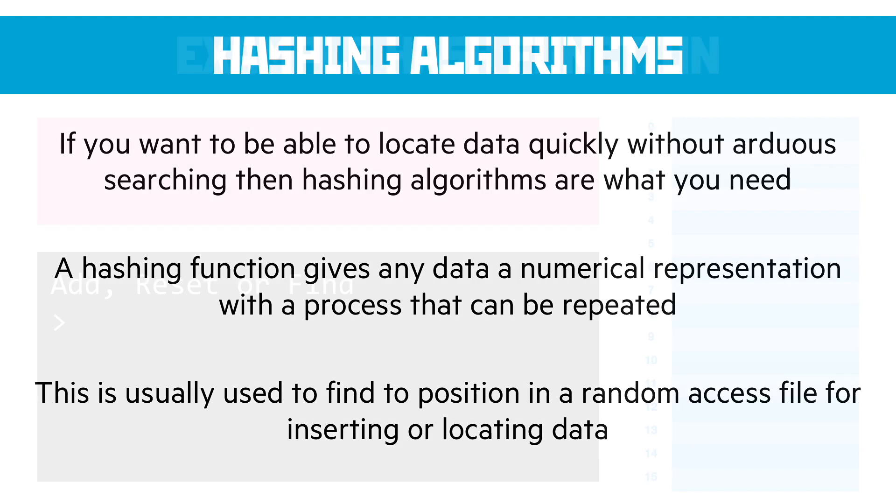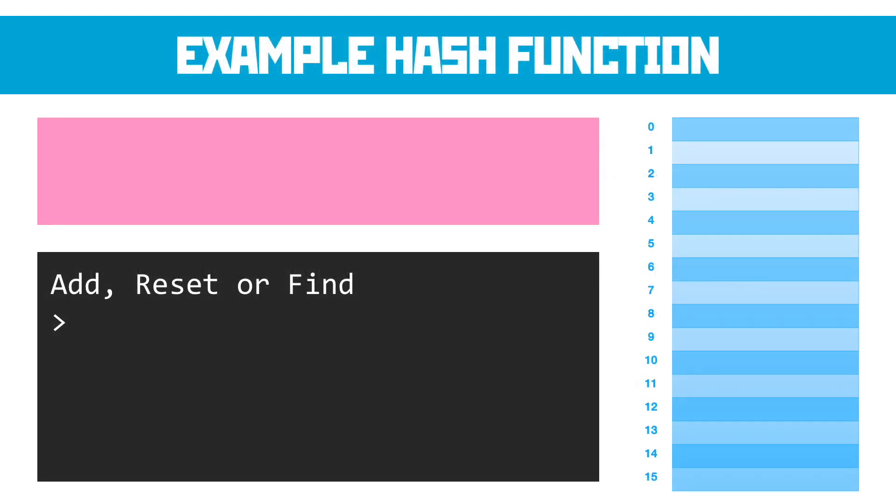So here's an example of a hashing function. You've got your hash table on the right hand side and they are our physical memory locations and our program on the left. So if you wanted to add a piece of data like the word test, a simple hashing function could be to take the numerical value of each of those letters. Now assuming A is 1, B is 2, C is 3, what you end up with is T being 20, E being 5, S being 19 and T being 20. And then you could add those values up, which gives us 64.